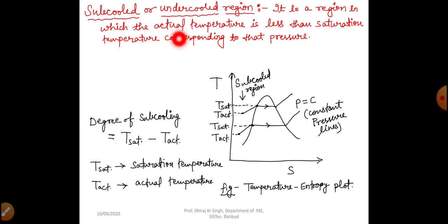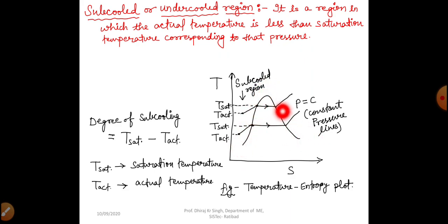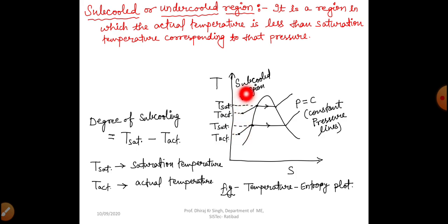What is subcooled or undercooled region? It is a region in which the actual temperature is less than the saturation temperature corresponding to that pressure. Here we have drawn a T-S plane with the saturated liquid line and saturated vapor line curve for water. We can see the constant pressure line, and left to the saturated liquid line is our subcooled region.